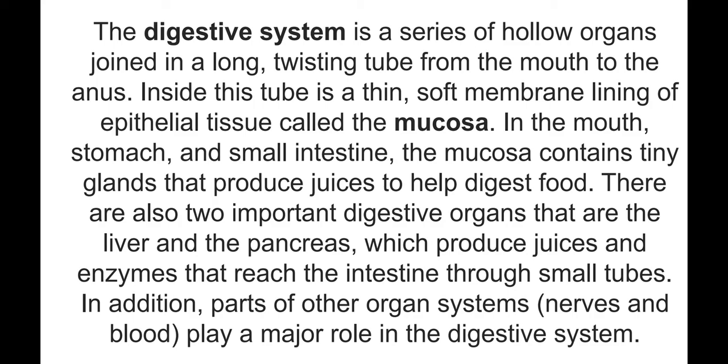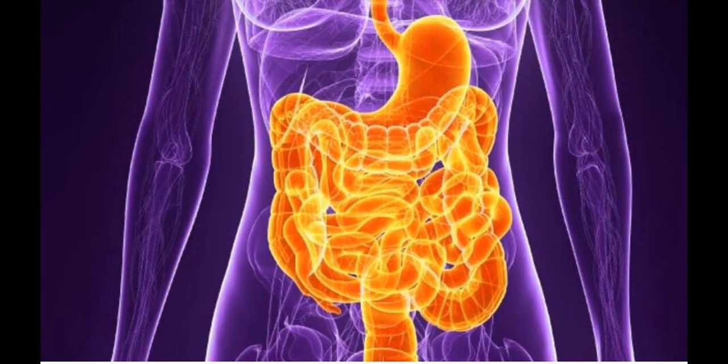There are also two important digestive organs — the liver and pancreas — which produce juices and enzymes that reach the intestine through small tubes. In addition, parts of other organ systems like nerves and blood play an important role in the digestive system. You can see this schematically in this picture.